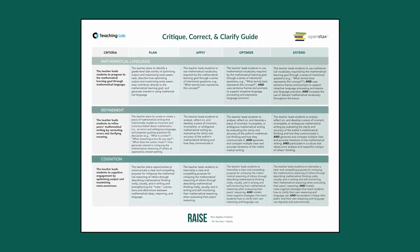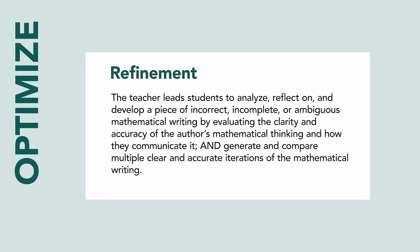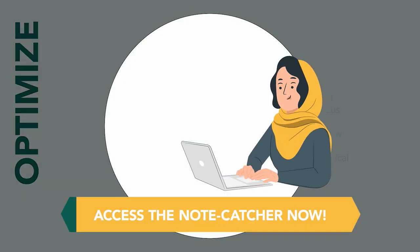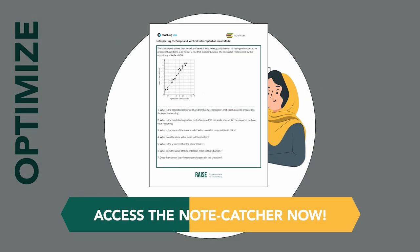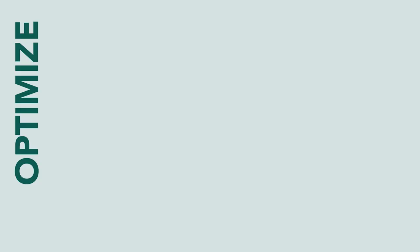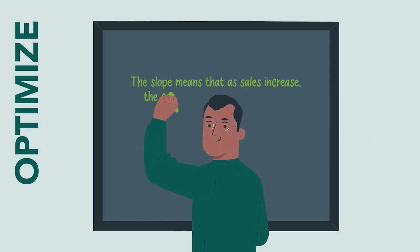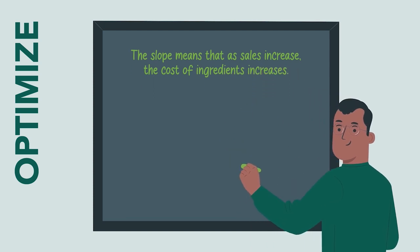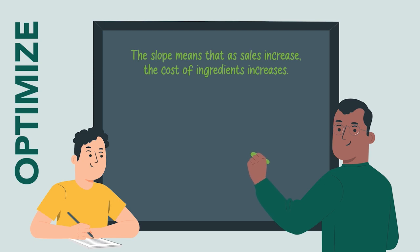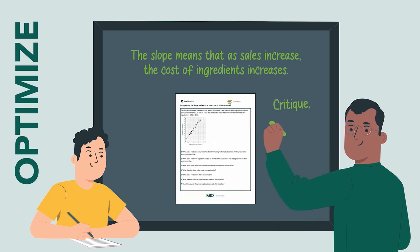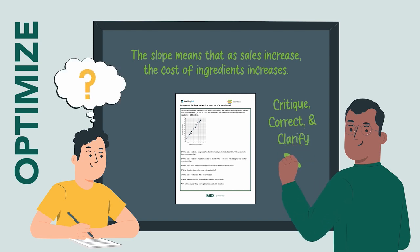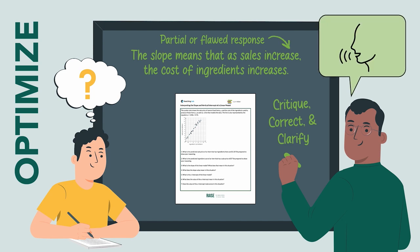What could it take to improve this routine even further? Let's zoom in on one of the ways we can optimize the routine's refinement criteria. Access the note-catcher and guide now to reference the full task once again. Recall earlier when the teacher presented the following statement to the class: The slope means that as sales increase, the cost of ingredients increases. Imagine that students are new to this routine and need to be taught the thinking that goes on when we critique mathematical statements. So, after introducing Critique, Correct, and Clarify to students, have them think about the questions you ask yourself while refining statements. Once you introduce the partial or flawed statement, narrate how you think about the statement and how it could be changed.